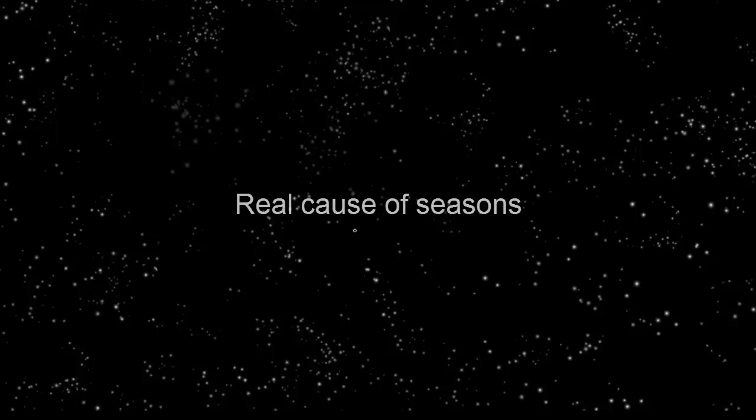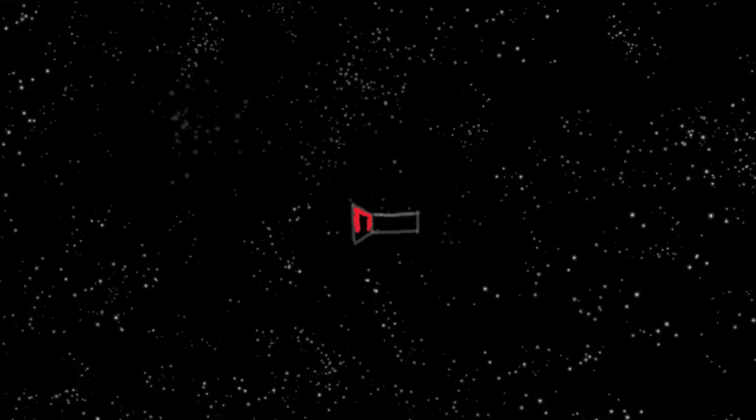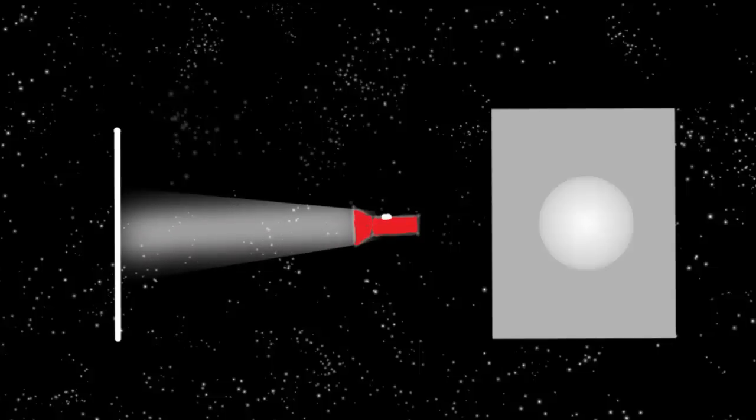Now let's look at the real cause of seasons. Let's take a source of light and shine it on a paper horizontally - we will see a circle of light. Now if we turn the paper, we will see an ellipse.